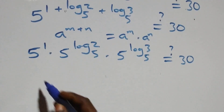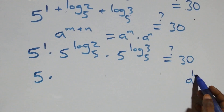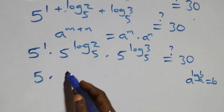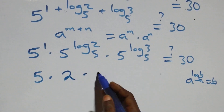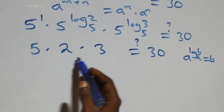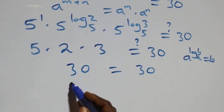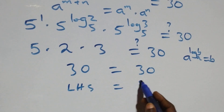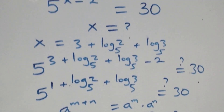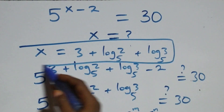Five raised to power 1 is 5. Using the identity a raised to power log_a(b) equals b, 5 raised to power log₅2 equals 2 and 5 raised to power log₅3 equals 3. So we get 5 times 2 times 3 equals 30, which confirms the left hand side equals the right hand side. Hence x equals 3 plus log₅2 plus log₅3 satisfies the given problem.